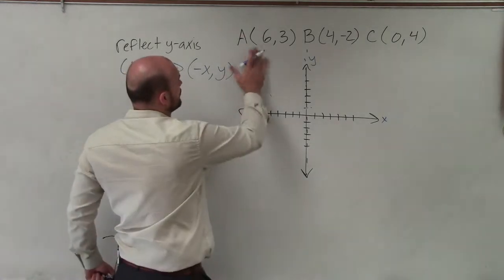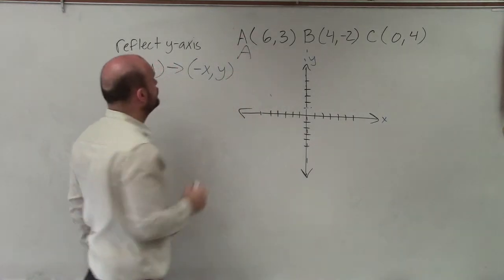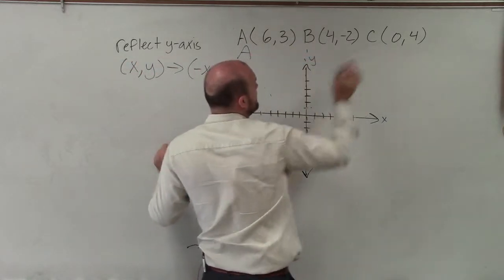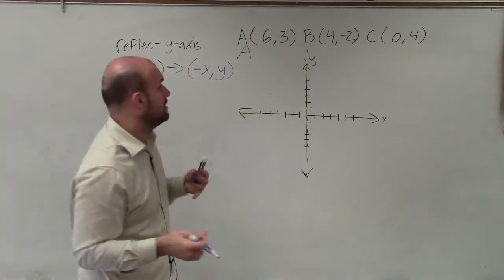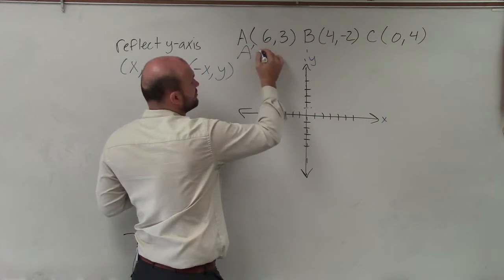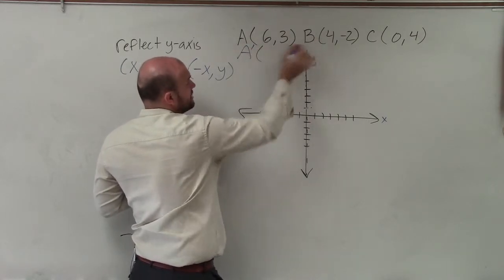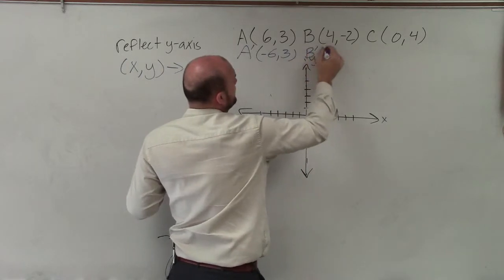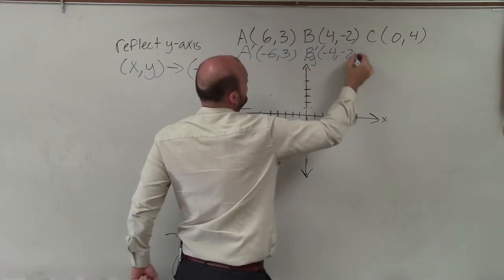So let's go and take a look at this. Actually, let's go and figure out what our new coordinates would be. So by applying this rule for the reflection of the y-axis, I'm just going to negate, meaning take the opposite of each one of my coordinates. So a prime, which would be my new image, as these are the pre-image, would be negative 6 comma 3.